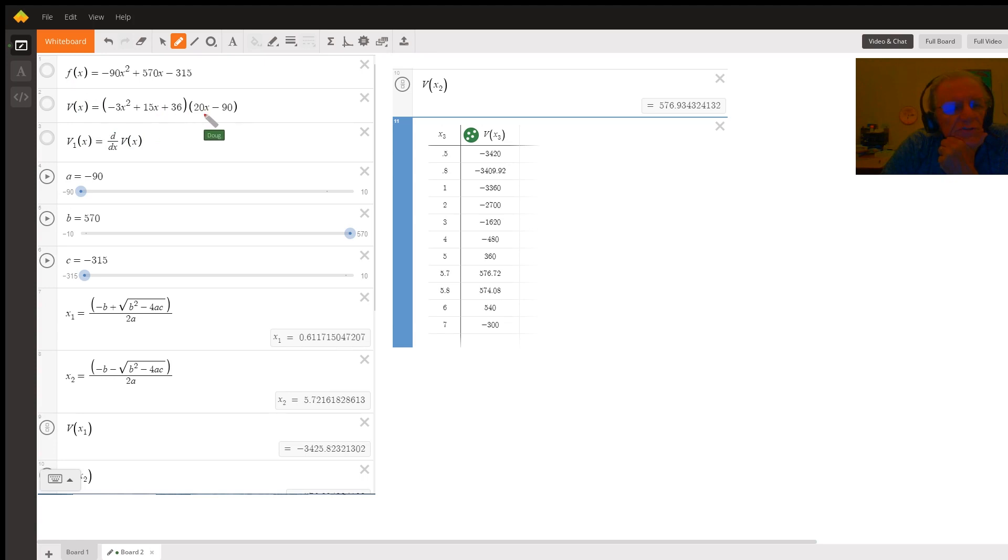There's the original function v of x. I used the Desmos derivative function to get v sub 1. And I'll use that over here in this.